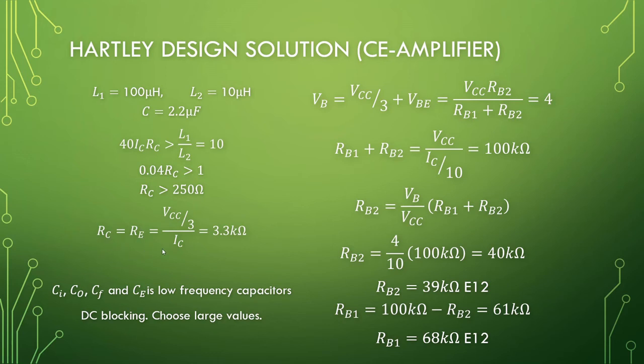So RC and RE should be the same for maximum swing. VCC over 3 divided by the collector current will give us 3.3 kilohm resistors. Any DC blocking capacitors can be chosen quite large, can also go with 10 microfarads here, work out fine.